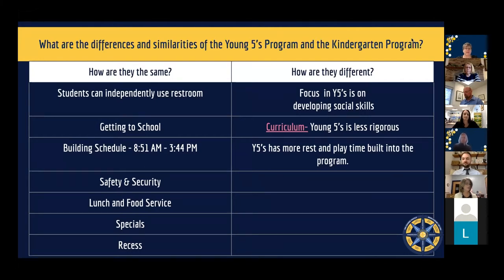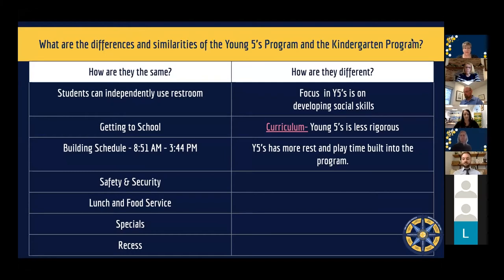What else is the same about Young Fives and Kindergarten? Coming to school — both programs have the ability to come to school on a school bus. Some students will be in the walk zone, some will be driven. All of those options are available depending on how close they live, their boundary, and whether transportation is offered.